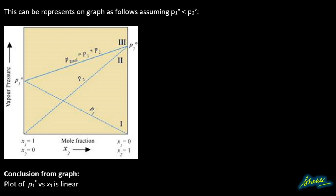This can be represented on a graph. Assuming that P1° is less than P2°, one axis is vapor pressure and the other axis is mole fraction. When the mole fraction of x1 is 0, the mole fraction of x2 is 1, and at that point the partial pressure of component 2 reaches P2°.